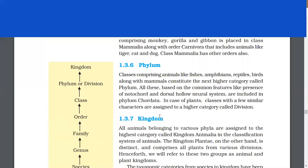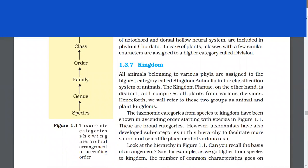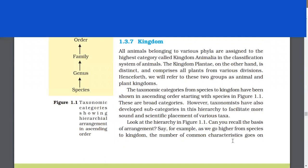Kingdom. All animals belonging to various phyla are assigned to the highest category called Kingdom Animalia in the classification system of animals. The Kingdom Plantae, on the other hand, is distinct and comprises all plants from various divisions. Henceforth, we will refer to these two groups as animal and plant kingdoms. The taxonomic categories from species to kingdom have been shown in ascending order starting with species in figure 1.1.